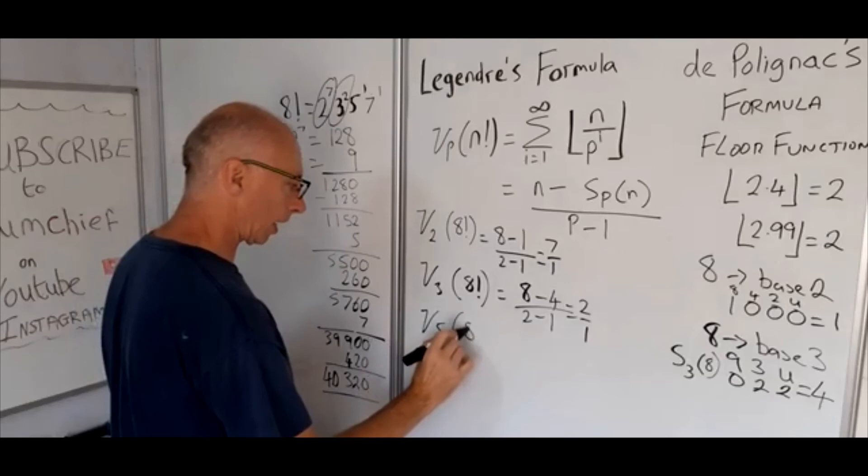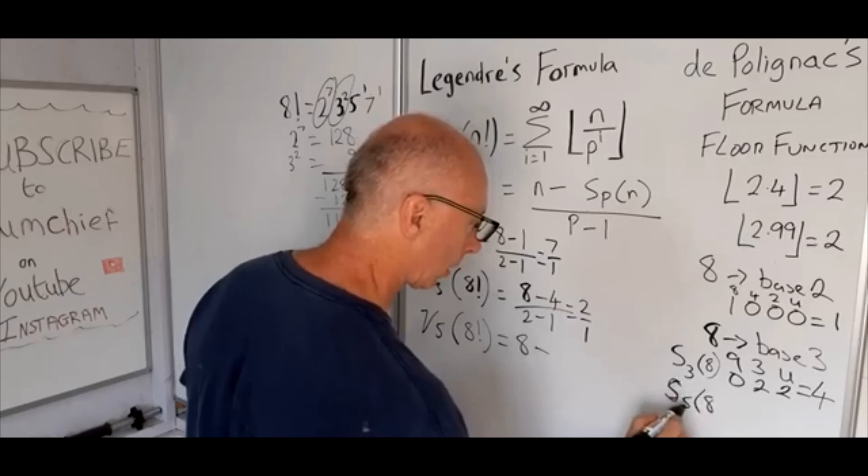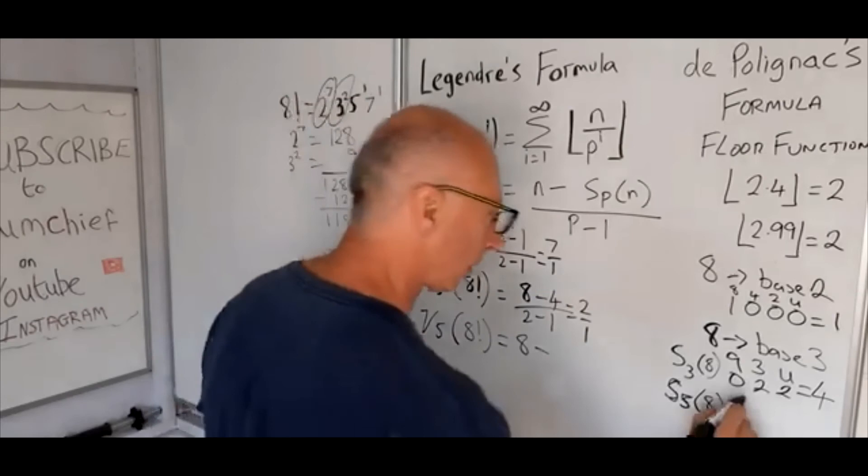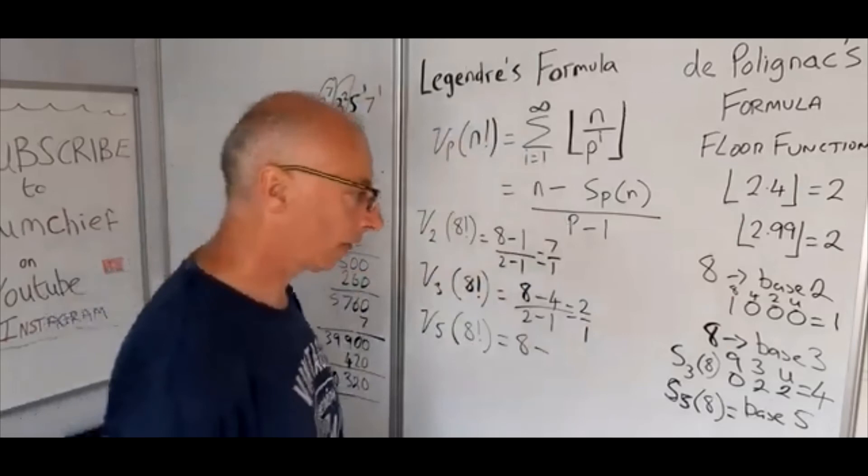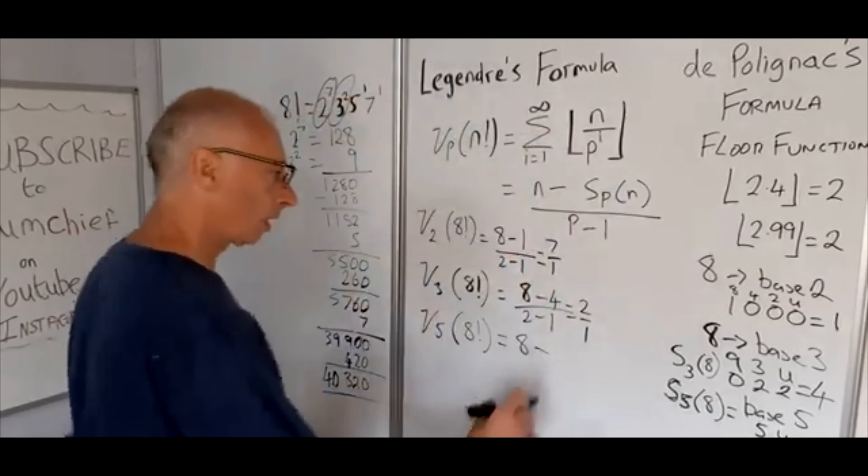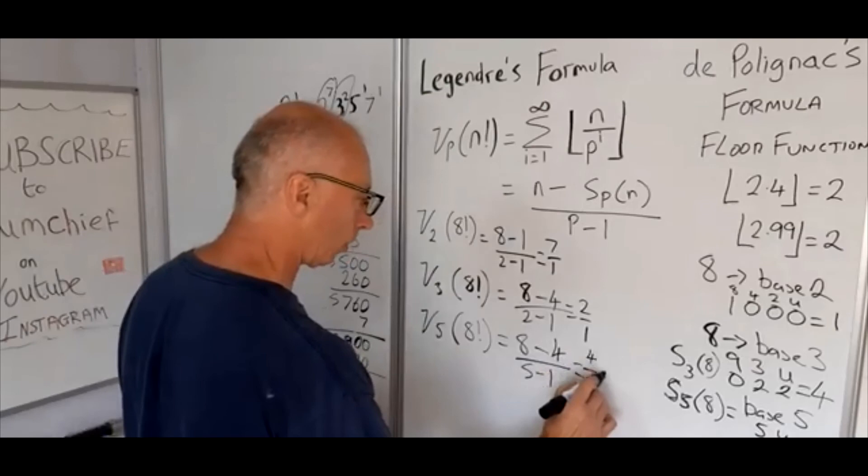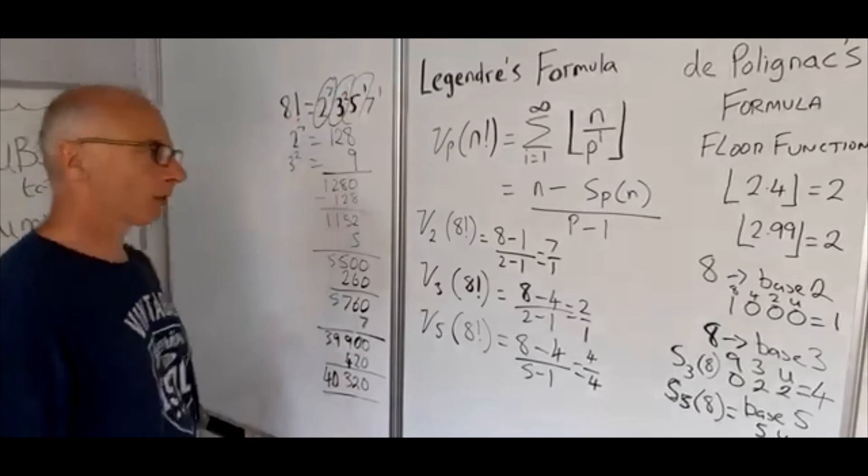Okay, let's try 5 with this formula. P-adic value of 5 for 8 factorial. So n is 8, S_5 of 8. So base 5: 8 in base 5 is just going to be 5's and units, so it's 1 five and 3 units. So the total of that is going to be 4. So 8 minus 4, and then again here our prime number is 5, so that's 5 minus 1. So it gives us 4 over 4, which gives us 1. So that checks that one there. That one works for this formula.